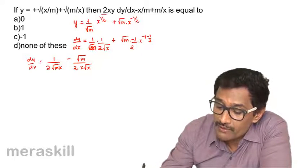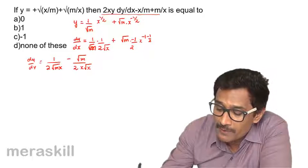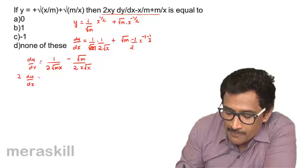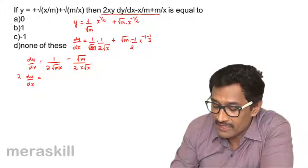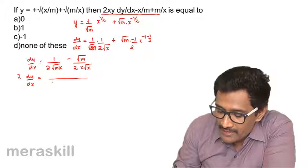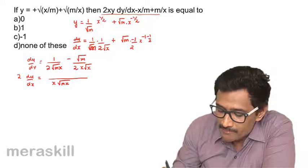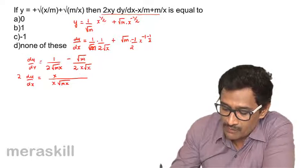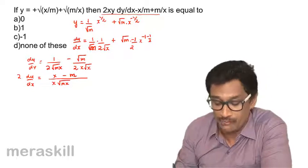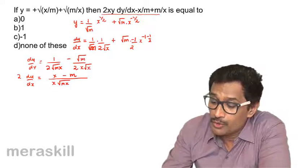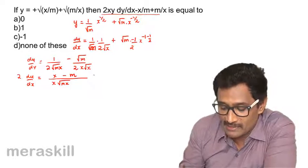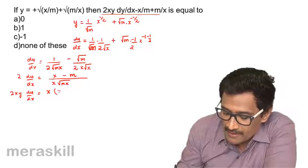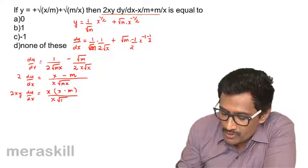We need to evaluate the expression 2xy(dy/dx). Multiplying both sides by 2xy, we take the LCM of the dy/dx expression — the LCM is x√(mx) — giving numerator x - m. So 2xy(dy/dx) = x(x - m)/(√(mx) × y).